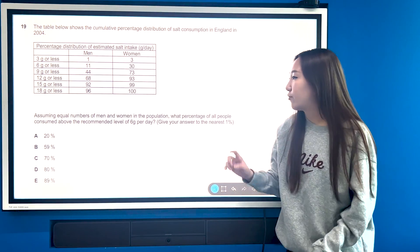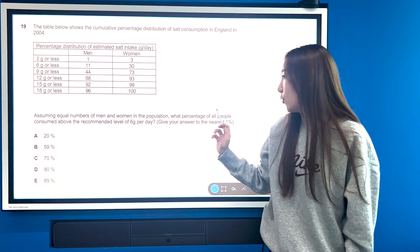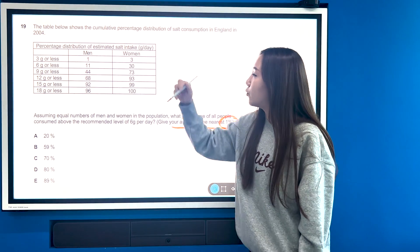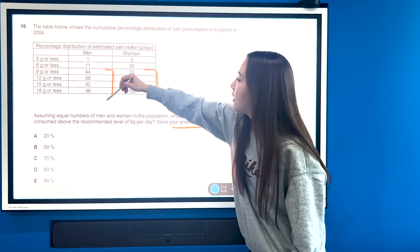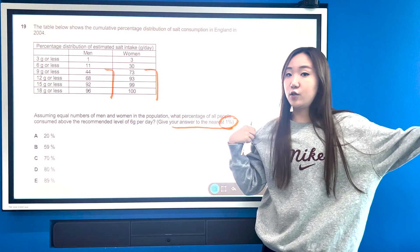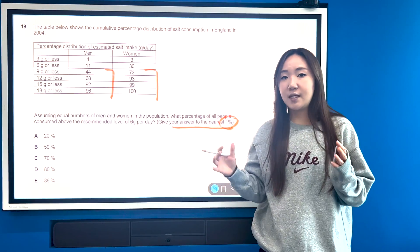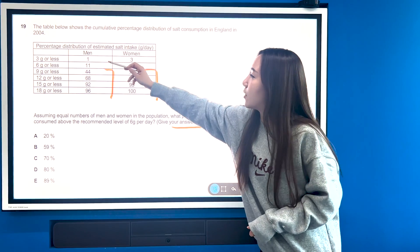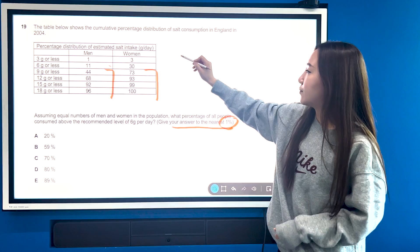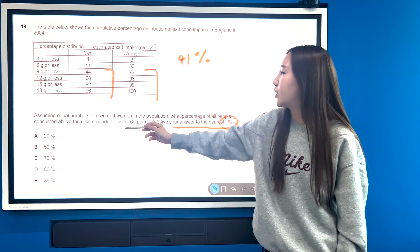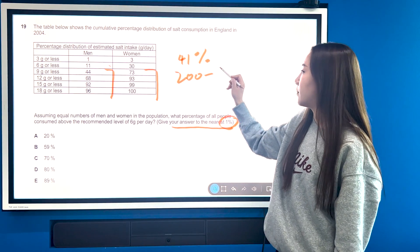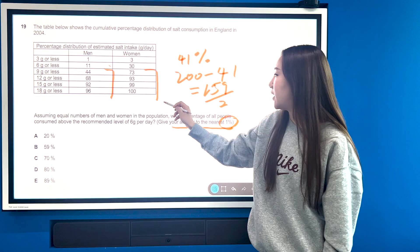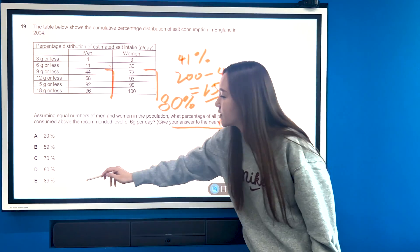Now let's look at the other information we're given. So we're told that assuming equal numbers of men and women in the population, what percentage of all people consumed above the recommended level of six grams per day? Give your answer to the nearest one percent. So we want this group here, basically. And we're told that there are equal numbers of men and women. That's very useful for us because what that means is we can take 200 percentage as being all of the population and then basically divide through by two to find our final answer. So if we just add up these here, 11 and 30, then 41 percent consume under this and above is the remaining. So it would just be 200 minus 41 to give us 159. We have to now divide by two to find the average. And that's going to be to the nearest percentage, 80 percent. So our answer in this case would be D.